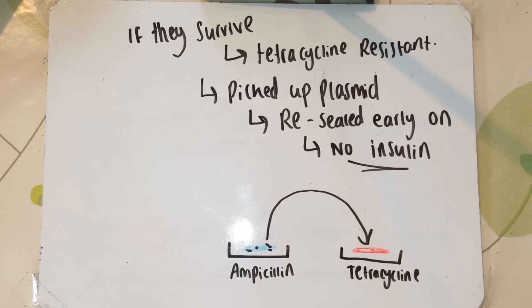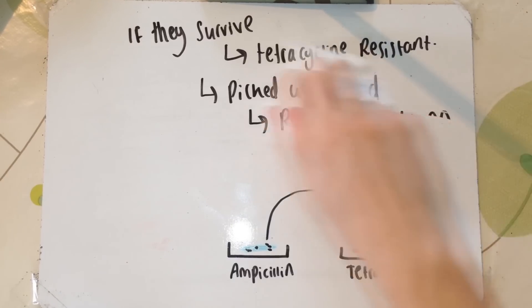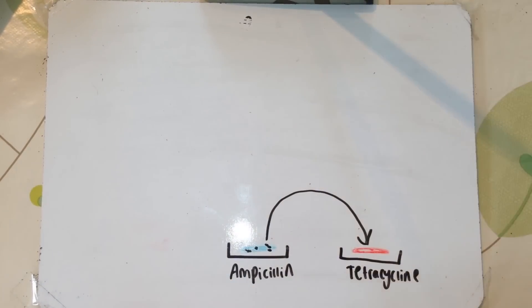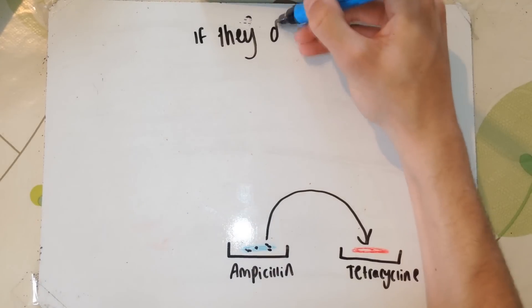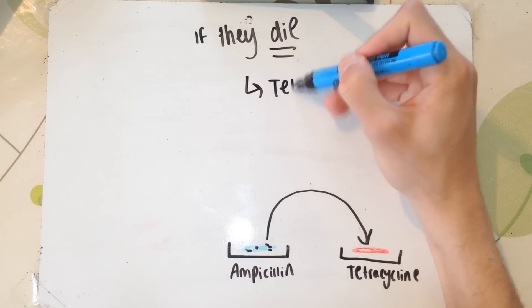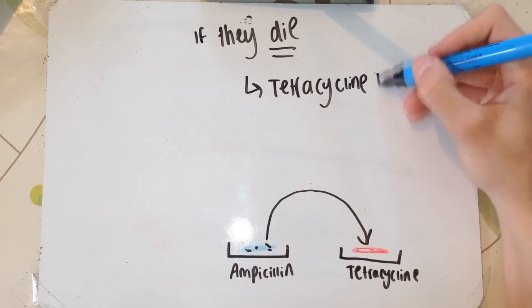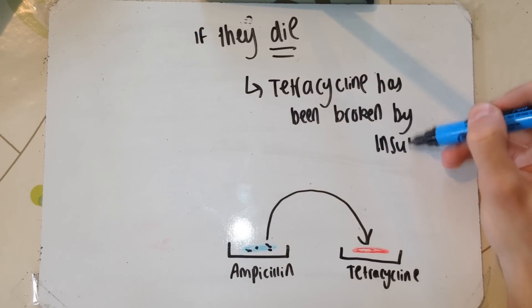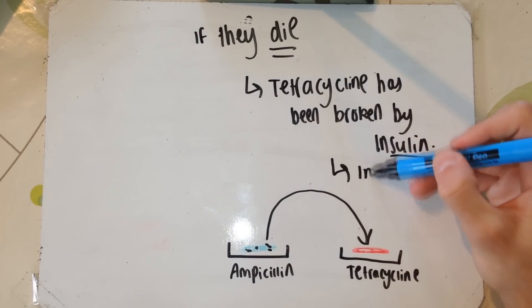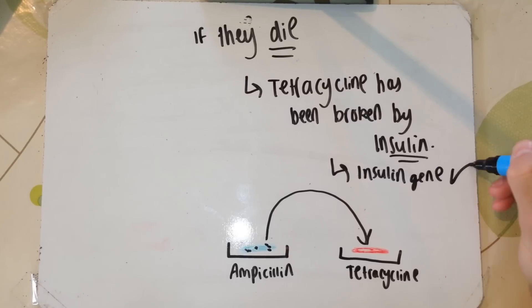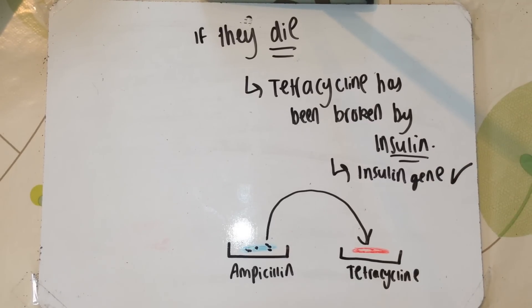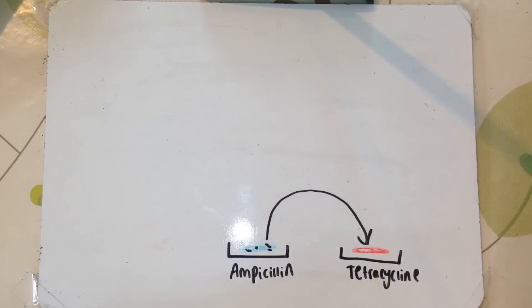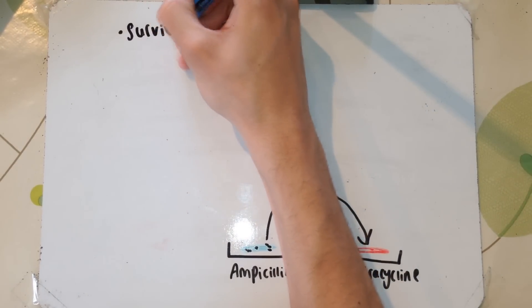However, if you choose bacteria from a colony that dies when added to tetracycline, this means not only have they picked up a plasmid giving them resistance to ampicillin, they have also picked up the correct plasmid that doesn't have tetracycline resistance — because the insulin gene has replaced the tetracycline resistance. This means the bacteria produce insulin. This is a foolproof two-step mechanism: it confirms the bacteria has picked up a plasmid, and then that it picked up the right plasmid. This process is known as replica plating. If the bacteria survive on ampicillin — correct, they have taken up a plasmid. If they die on tetracycline — correct, they have taken up the plasmid with the insulin gene.